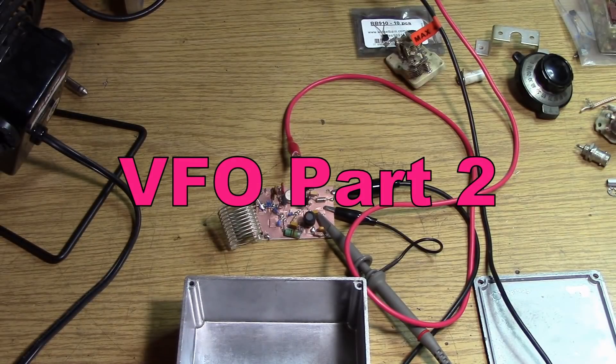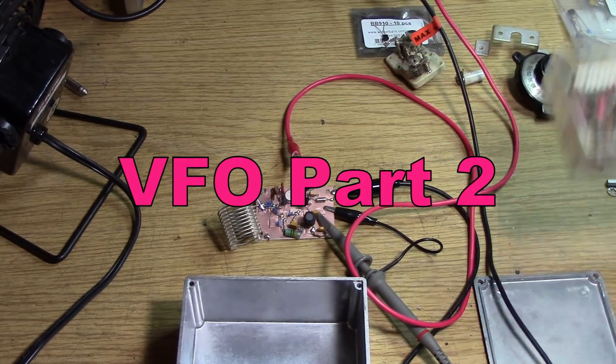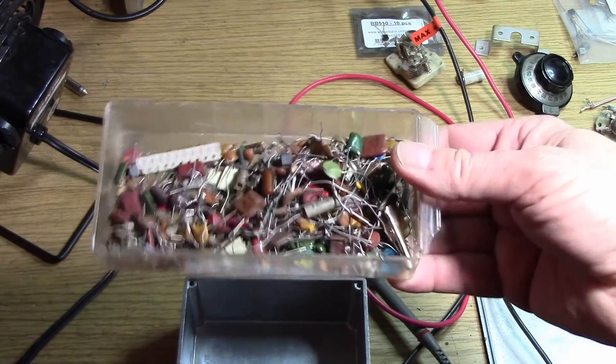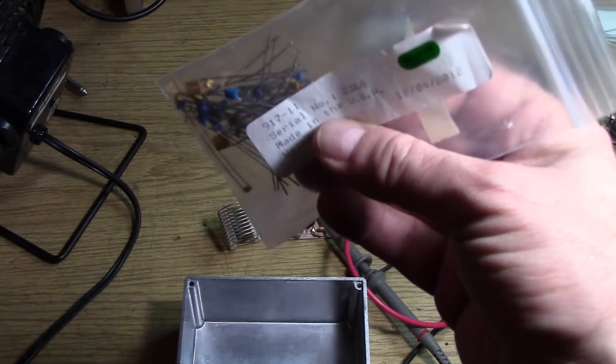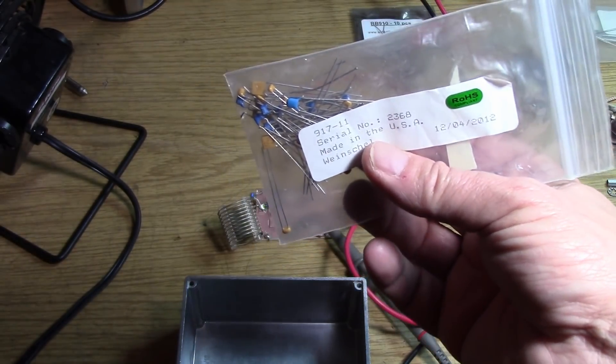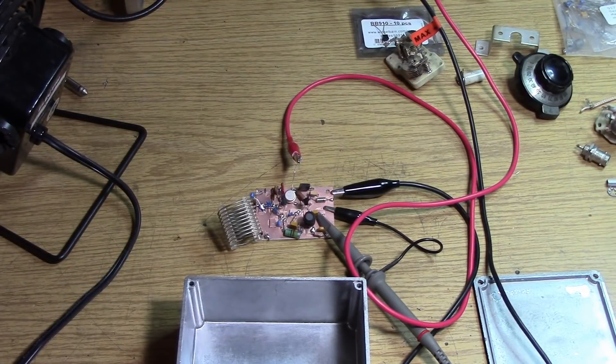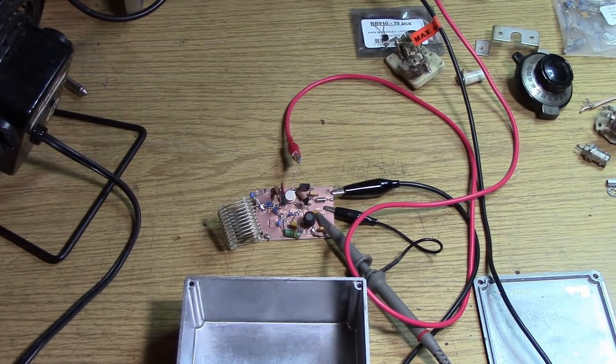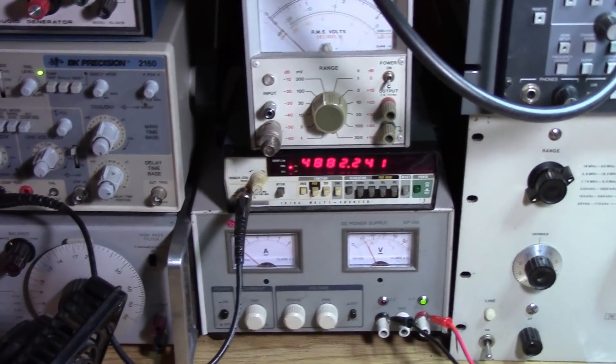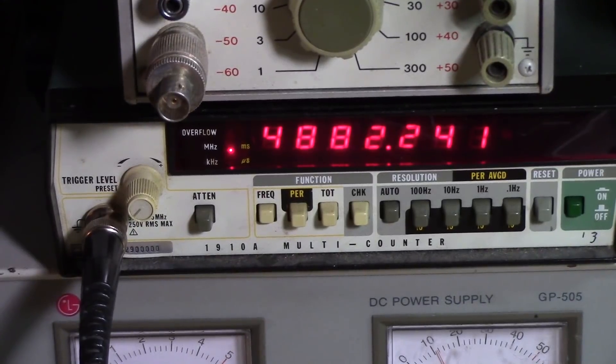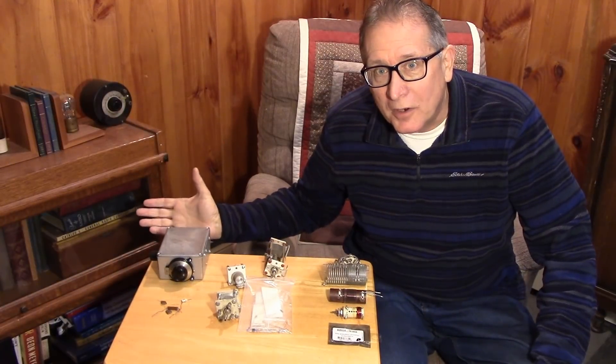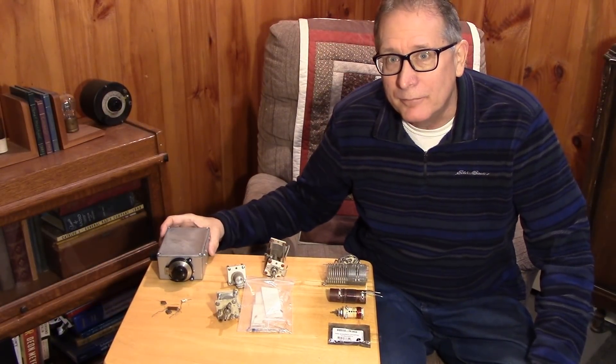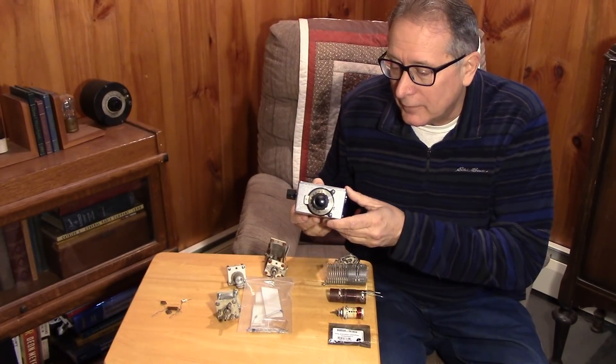I decided to use really high-quality caps—the kind you could get on Digikey or Mouser—instead of my usual junk box parts. It's making a difference, I hate to admit it. So welcome to part two of our VFO discovery video series.